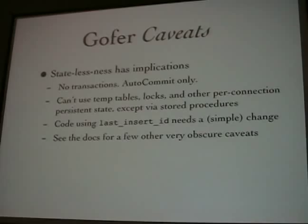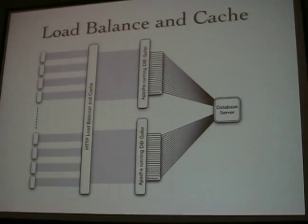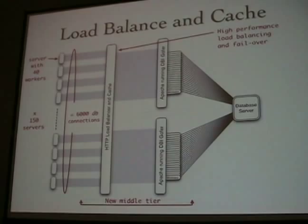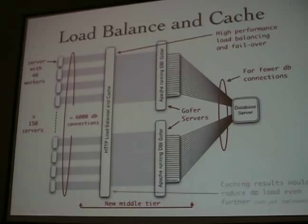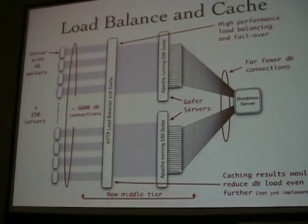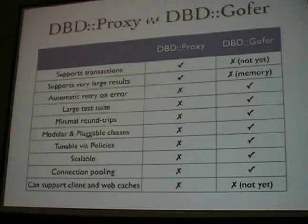Here's an example of using the HTTP transport, putting the GoFo servers behind a load balancer. Currently there are 6,000 connections in this example. You add this new tier with your load balancer, which gives you failover and load balancing. Far fewer connections to the GoFo servers. And most interestingly, you can add caching — you can use a web cache to cache your DBI requests. Basically, what we're doing here is turning the DBI API into a web service, so you'd be able to talk to it from other languages. It has built-in retries. In comparison with proxy, what it doesn't do is transactions or very large results — that's where proxy is still a win. But for everything else, GoFo is the way to go.